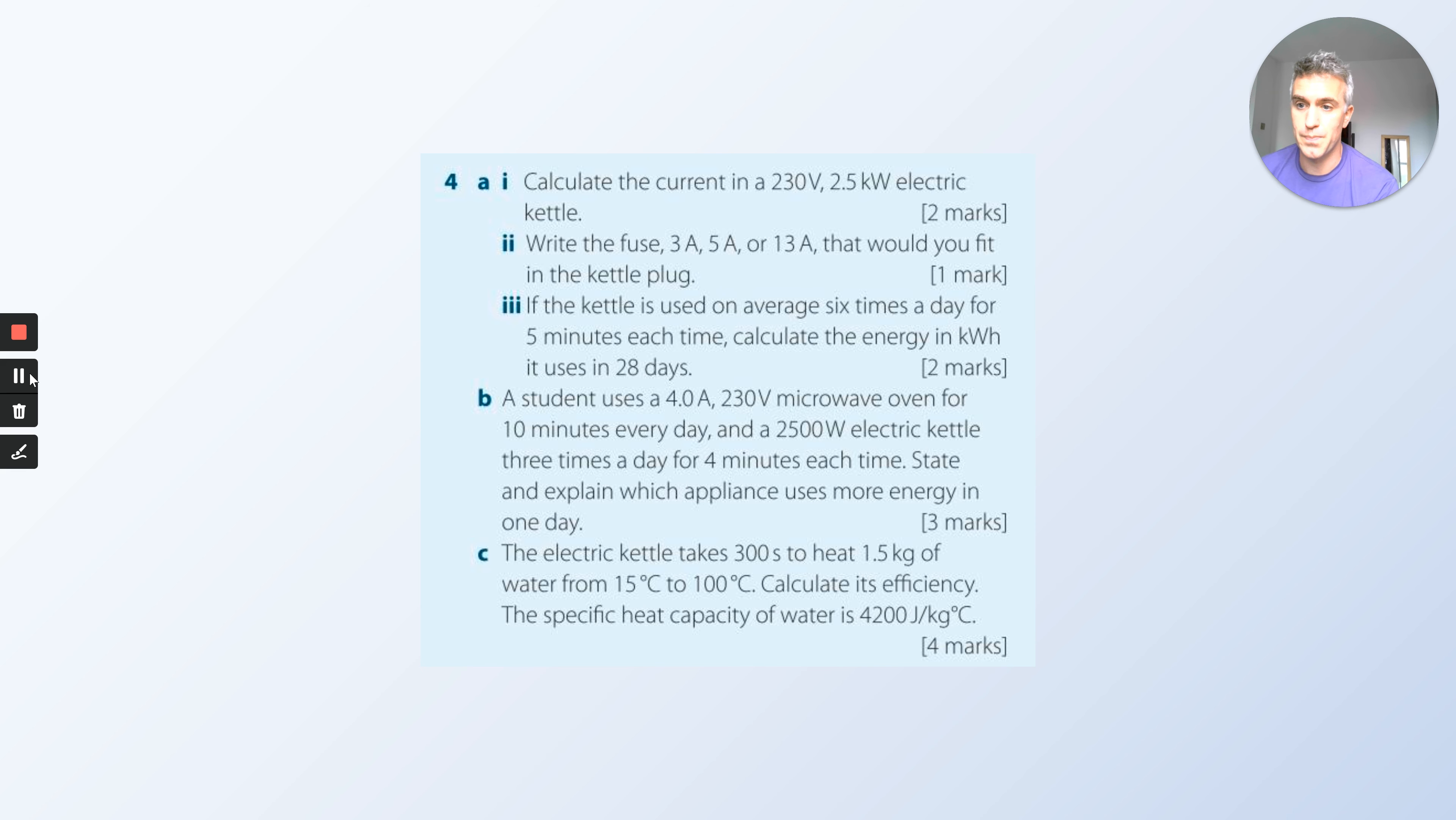Go back to the start if you're not sure. Write the fuse, 3 amp, 5 amp, or 13, that you would fit into the kettle plug. Use the information from the previous question. Remember, if the current is say 4 amps and you put a 3 amp fuse in, it will blow every time you turn it on, so the fuse has to be above the operating current.